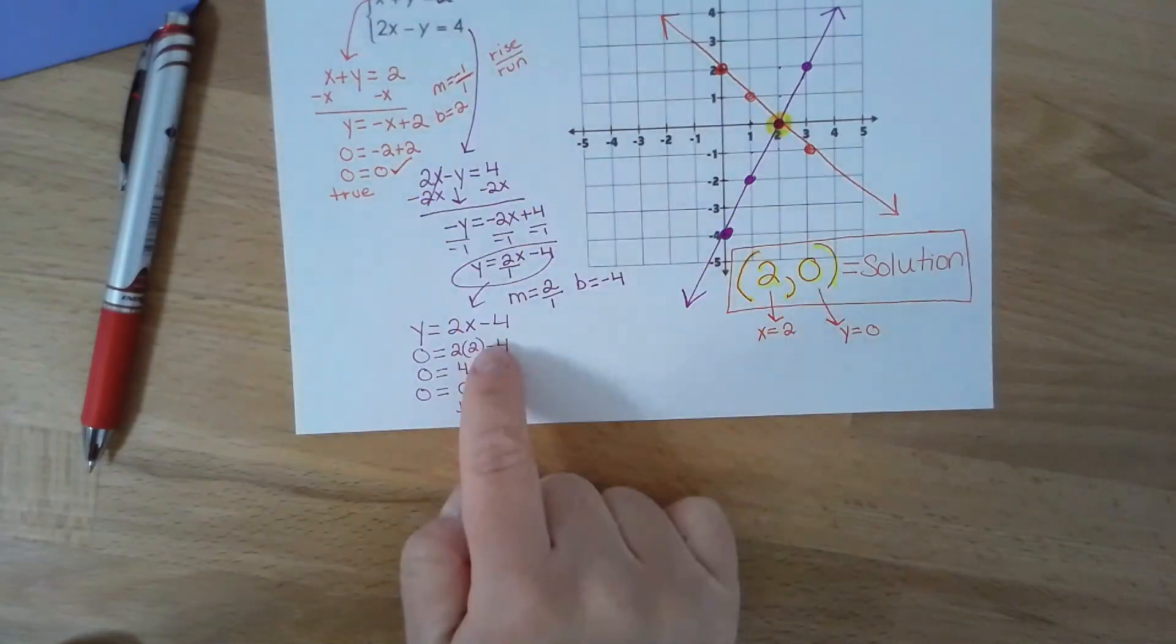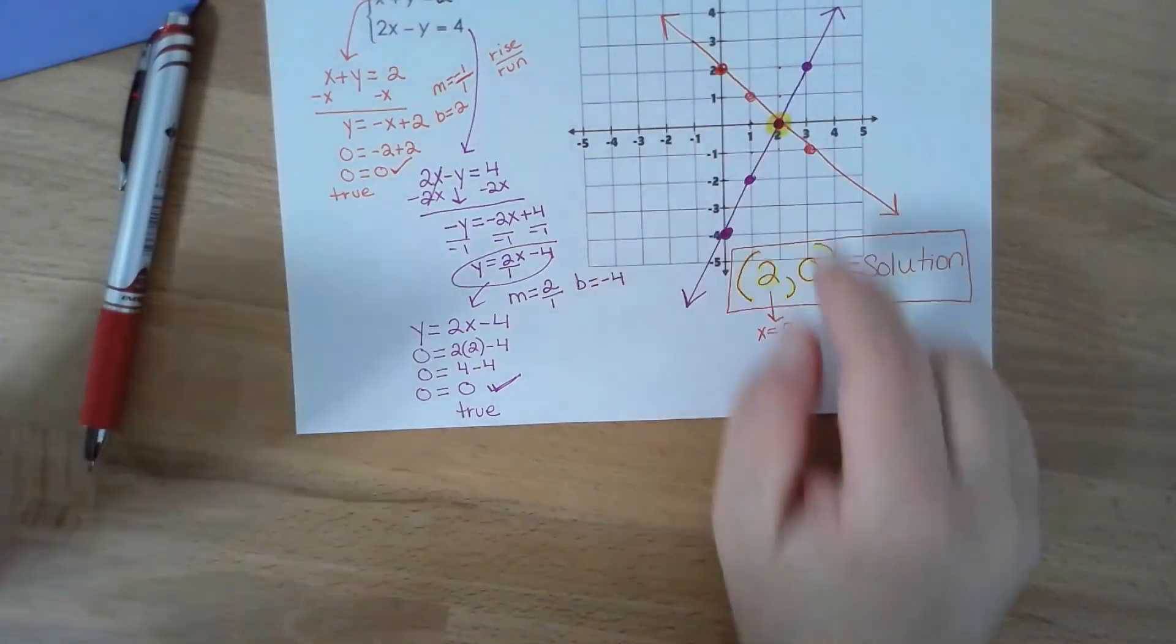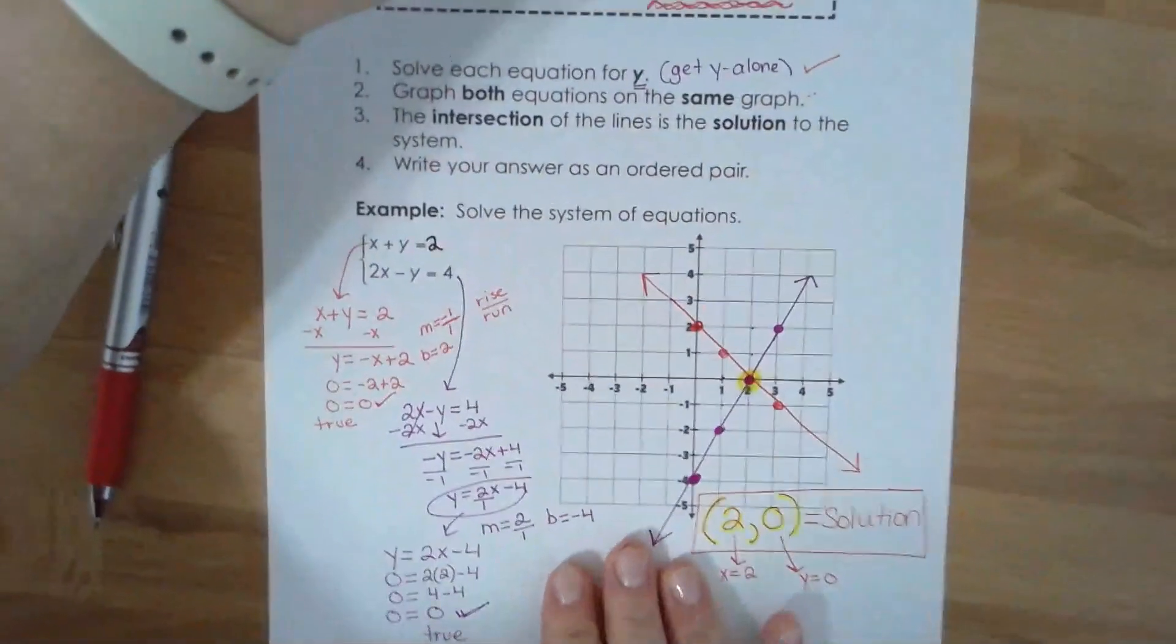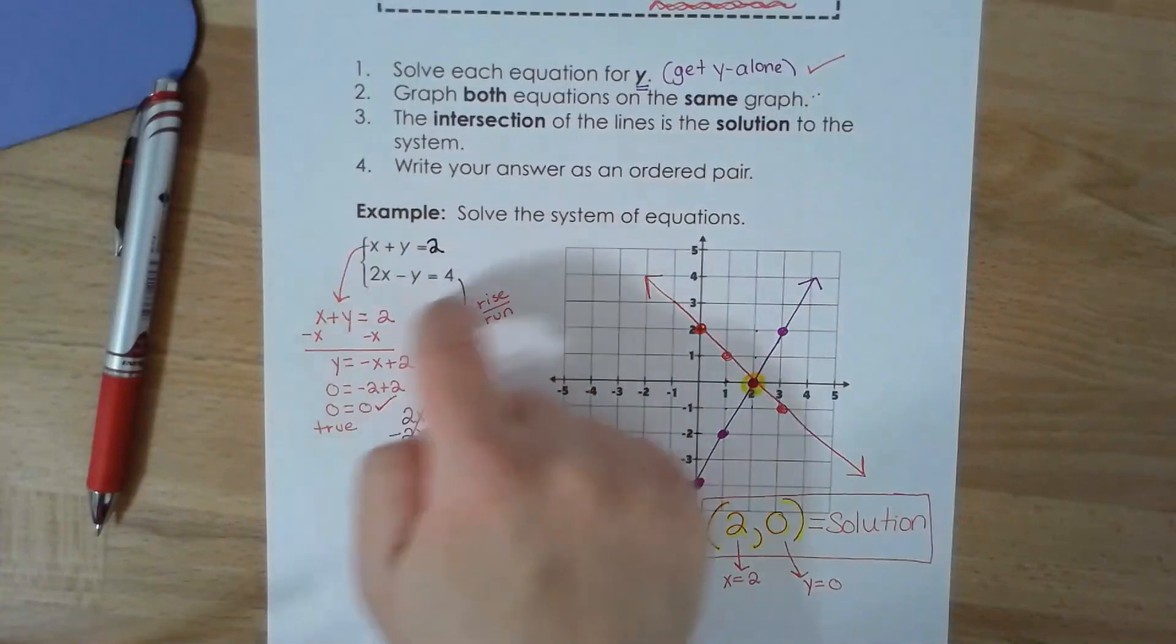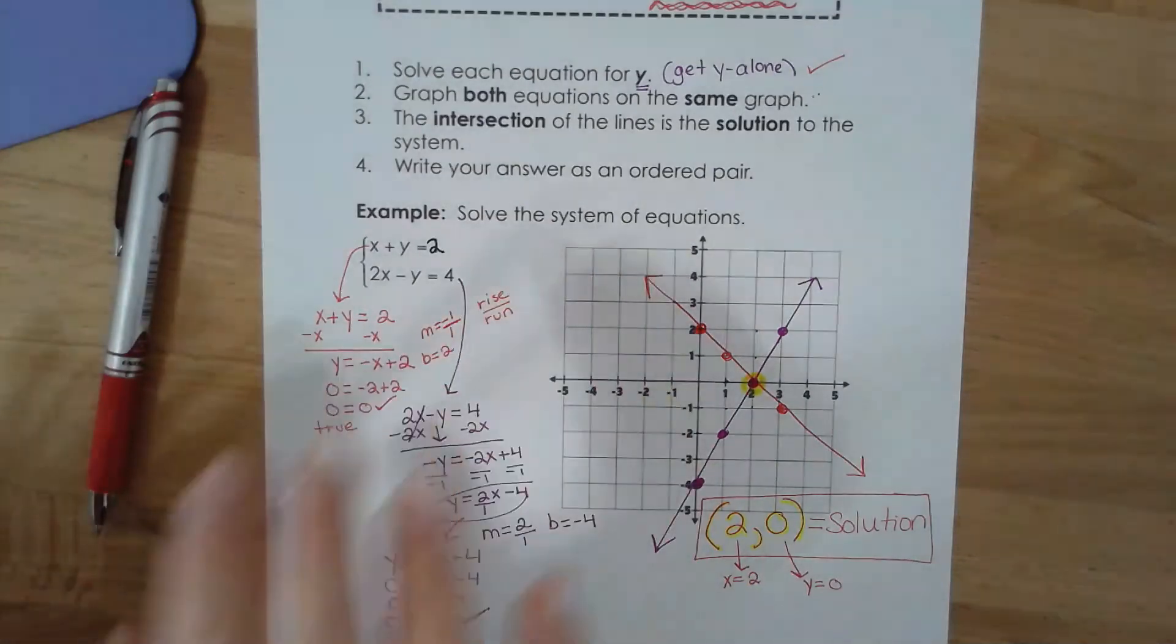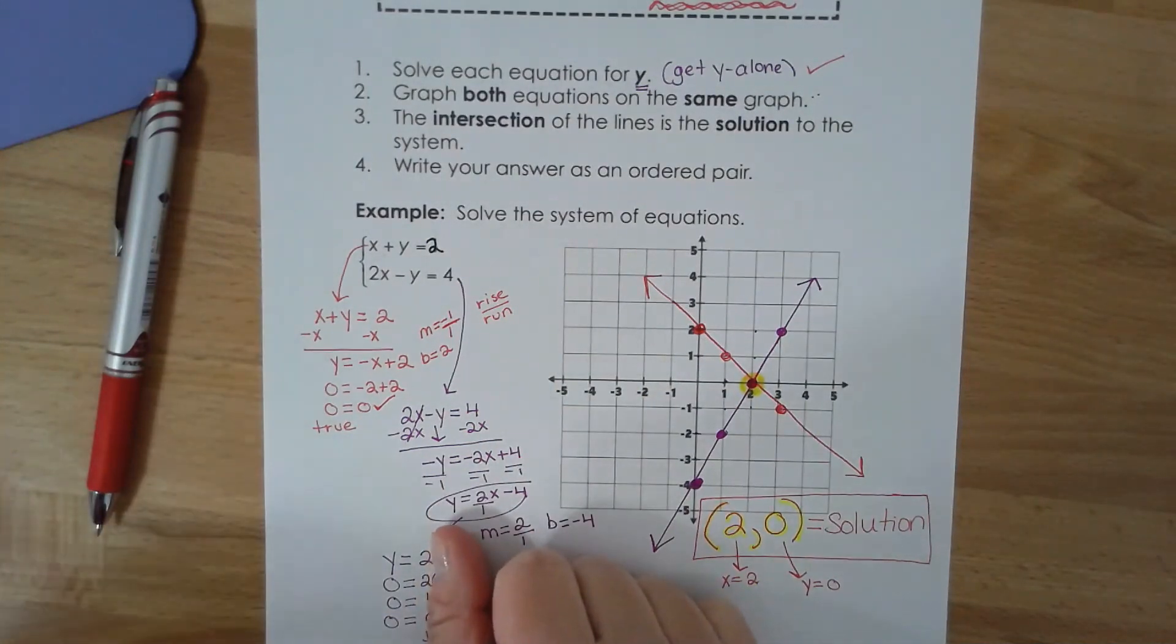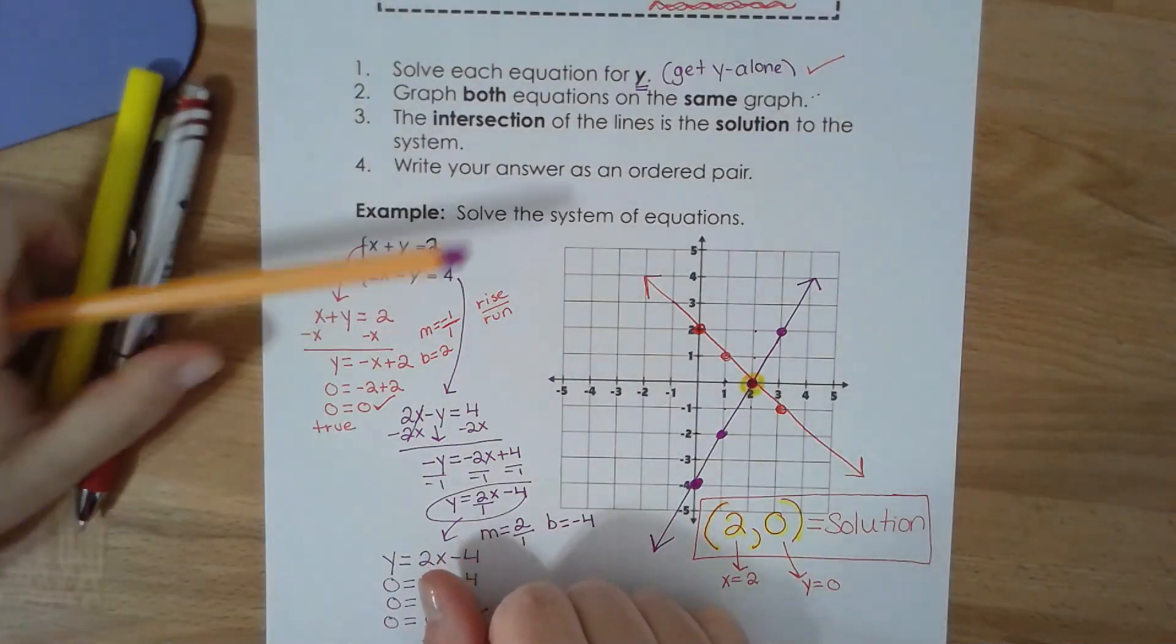So that's what we're trying to do here. We're trying to find that ordered pair that makes both statements true. What does it mean to be true? When I plug in the points, both sides of my equation are always equal. Okay, feel free to watch this video again. You guys are going to practice solving systems by graphing today and please submit your work.